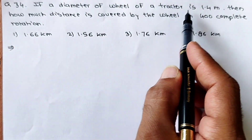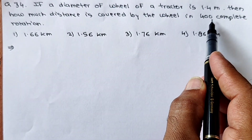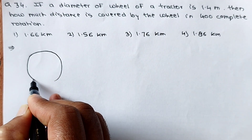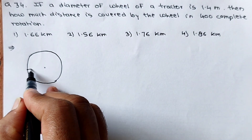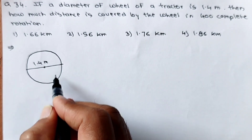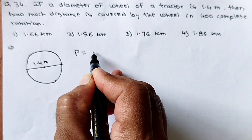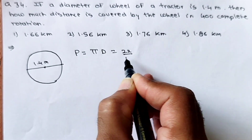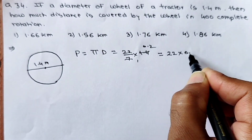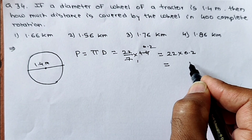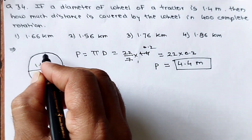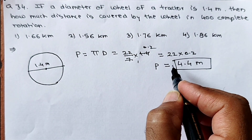See question number 34: if the diameter of the wheel of a tractor is 1.4 meters, then how much distance is covered by the wheel in 400 complete rotations? In one rotation, the wheel covers a distance equal to its circumference. The formula for circumference of a circle is π × D = (22/7) × 1.4 = 22 × 0.2 = 4.4 meters. So in one complete rotation, the wheel covers 4.4 meters.